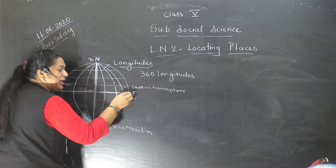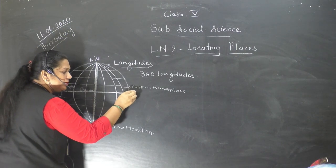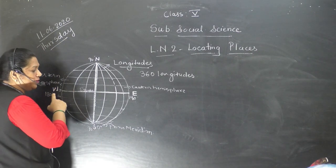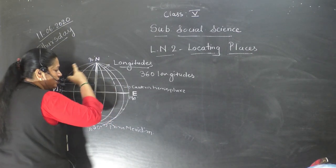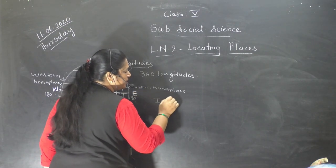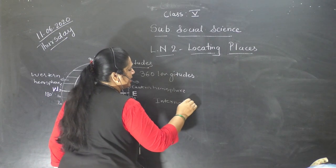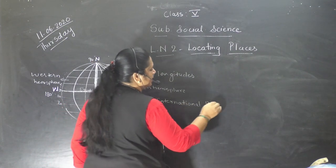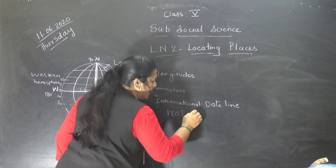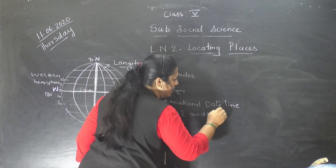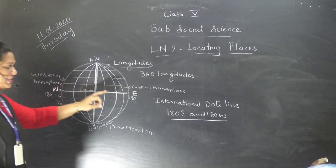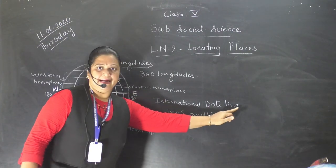The line 180 degree E and 180 degree W are on the same line, and we call it the international date line.